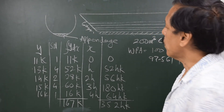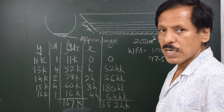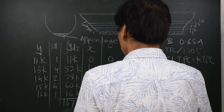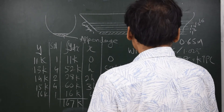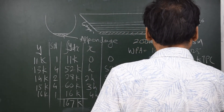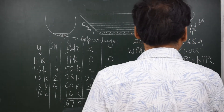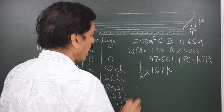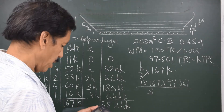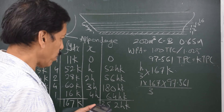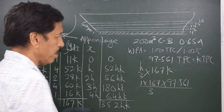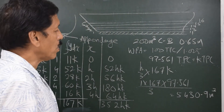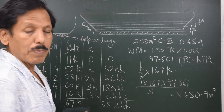To find the volume of the ship from 1 meter draft to 5 meter draft, the volume is given by H/3 times the sum, which is 167K. Since H equals 1 in this case, the volume is (1/3) × 167 × 97.561, giving 5430.9 cubic meters. So 5430.9 cubic meters is the volume between 1 meter and 5 meter draft of this ship.